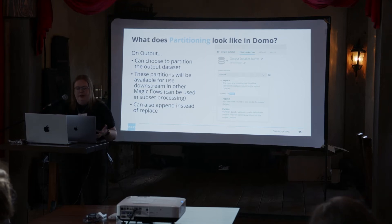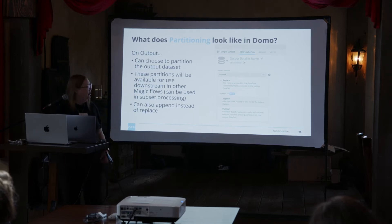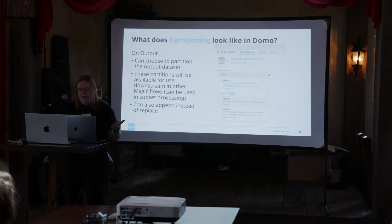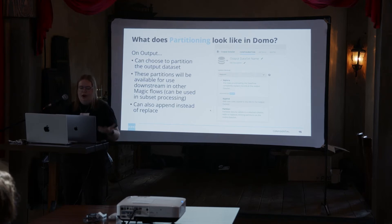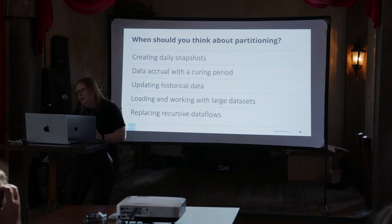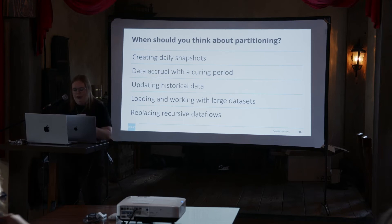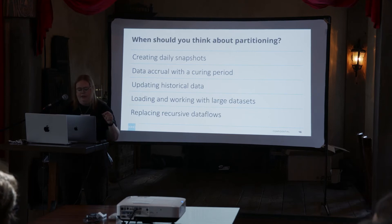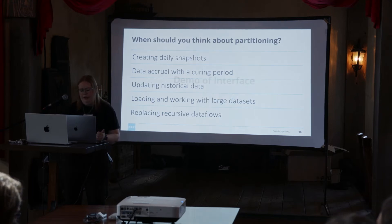What does partitioning look like in Domo? It is on the output tile, right in that update method dropdown. You can choose to replace like normal, you can append, or you can partition. These partitions become an artifact of the dataset — they're available downstream in other Magic flows and can be used in subset processing in subsequent Magic flows. You would think about partitioning when you're creating daily snapshots, accruing data with a curing period, updating historical data, working with really large datasets, or replacing recursive flows.